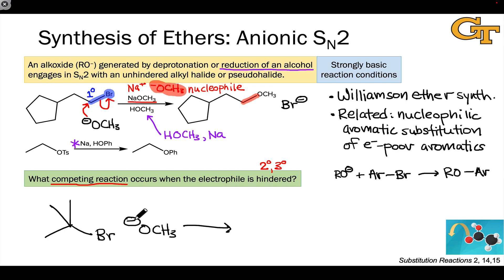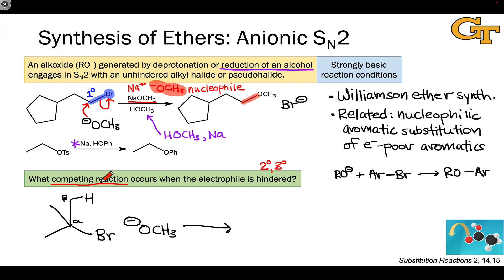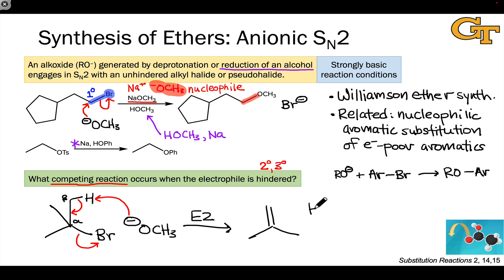What we want to happen is SN2 substitution of bromide by the methoxide anion. However, the hydrogens that are beta to the electrophilic carbon — beta to the bromine — are much more sterically accessible than the electrophilic carbon. So rather than substitution, we'll observe elimination, and more specifically E2 elimination under these strongly basic conditions. We won't end up with an ether at all — we'll end up with an alkene, as well as the neutral alcohol and bromide anion.